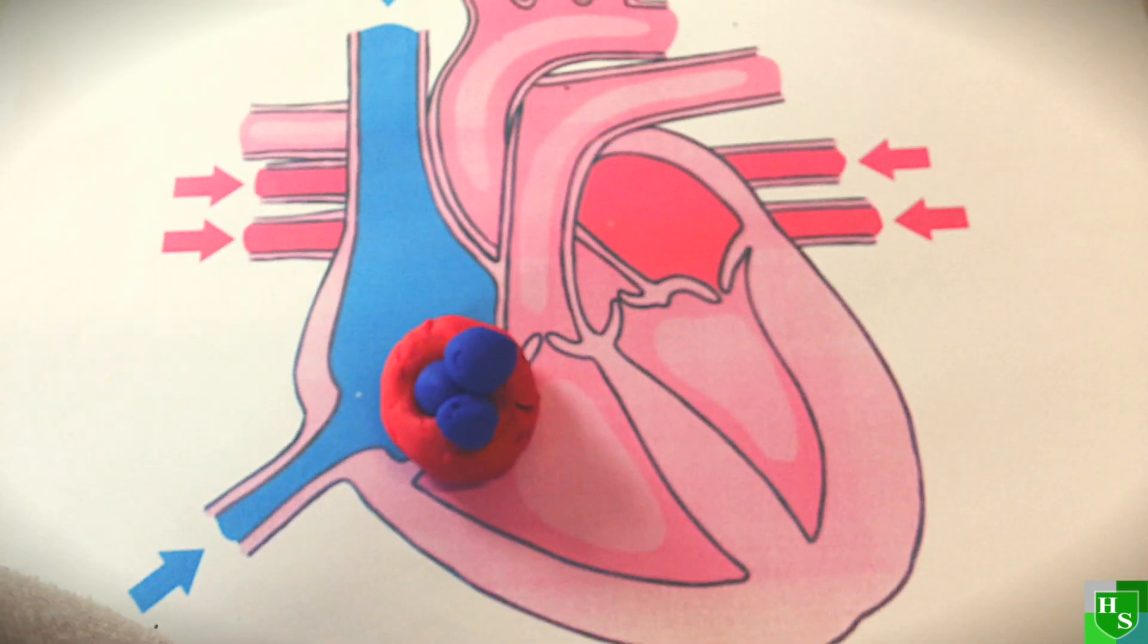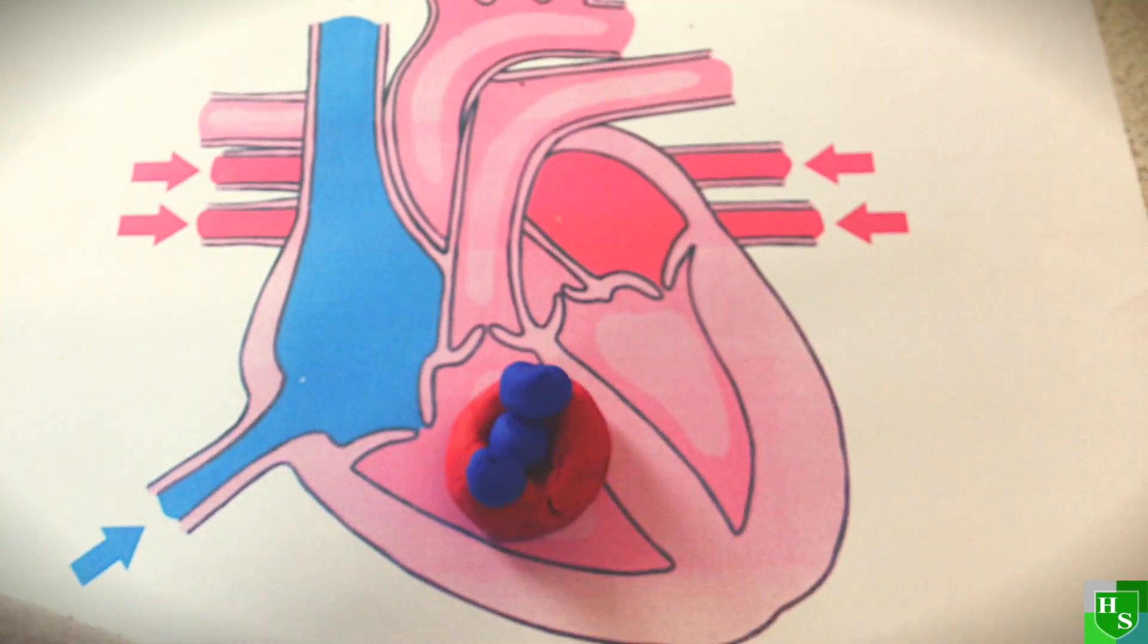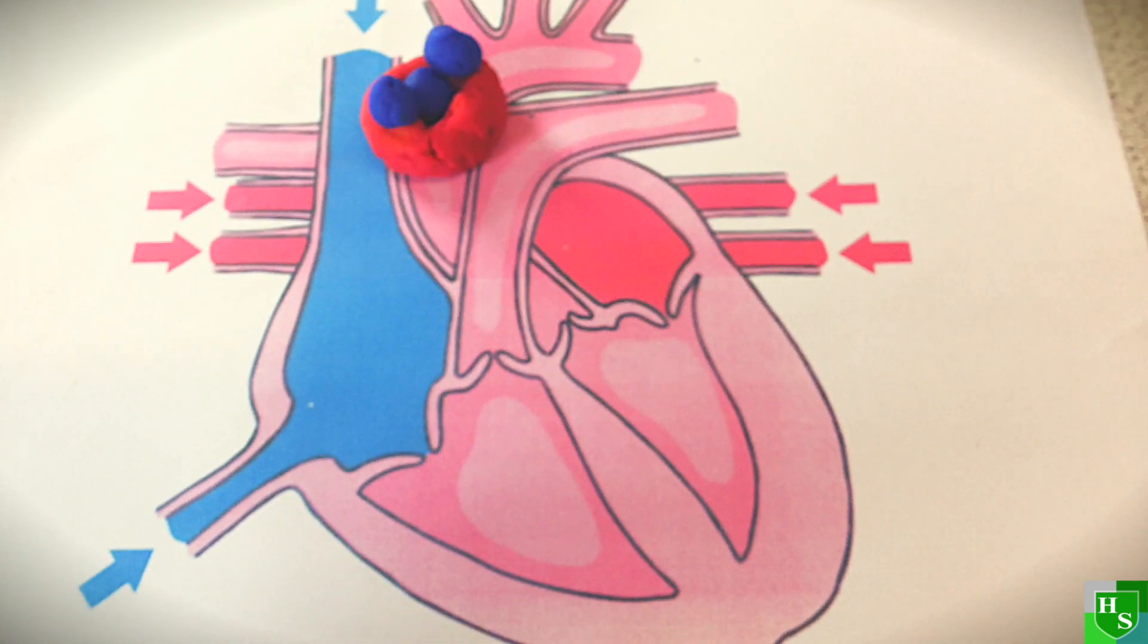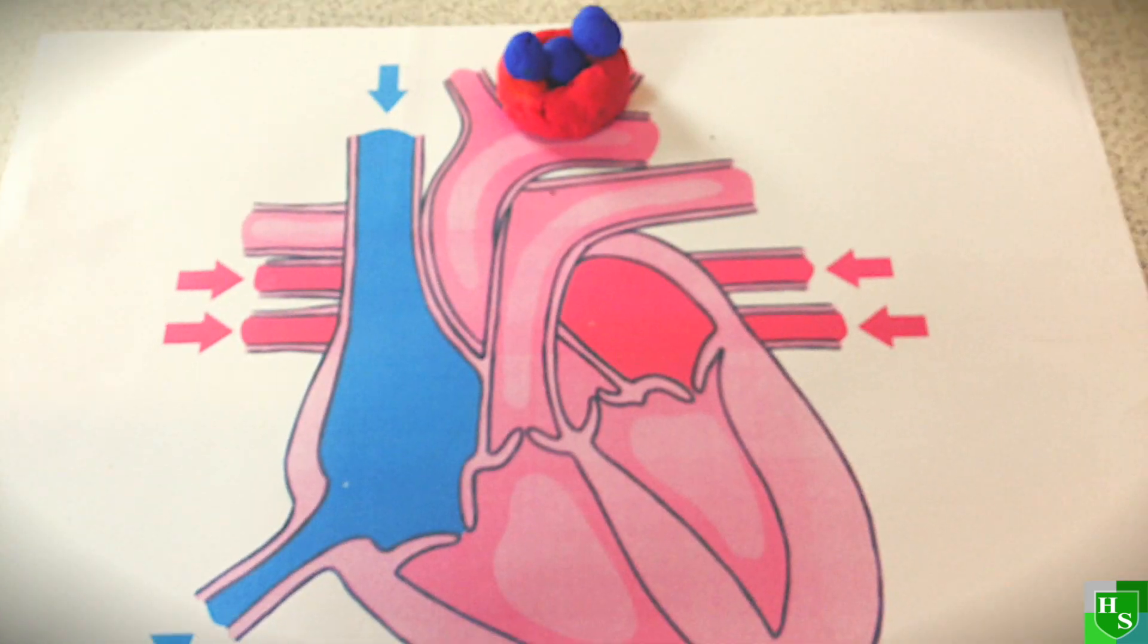The heart is home to many red blood cells. They come in through the superior vena cava, through the atrial valve, they go into the right atrium, then into the right ventricle.